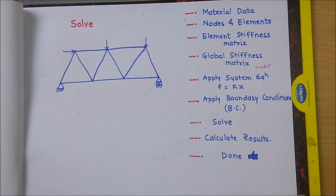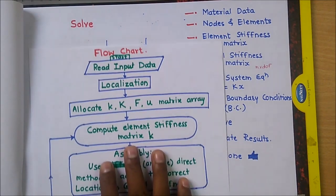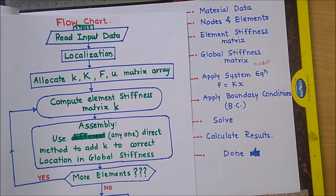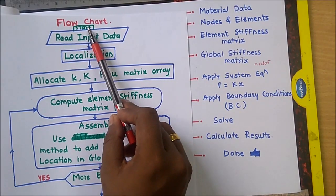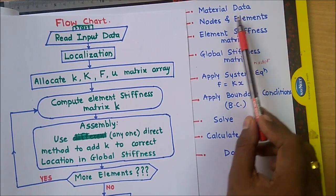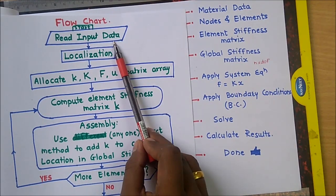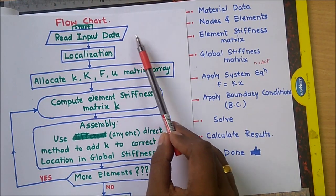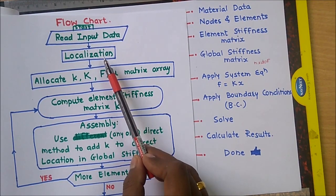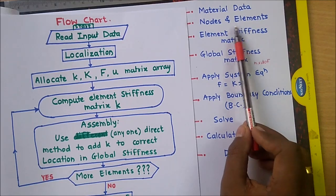Now we will see how to create a computer code flowchart. We use MATLAB or C++ languages for this computer code. Here is the flowchart. Initially we have to start, then read the input data — meaning the material data we have, we take that as input data. Then localization — localization means we have to prepare element and node connectivity.